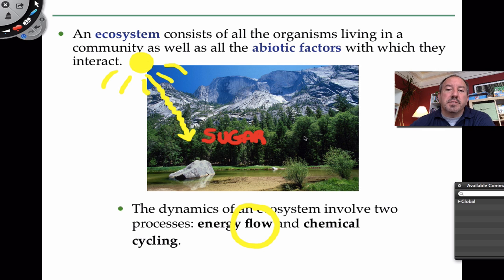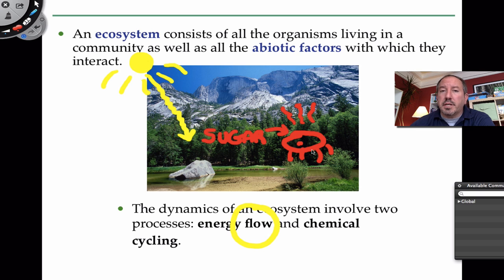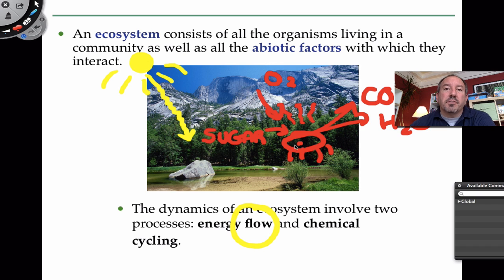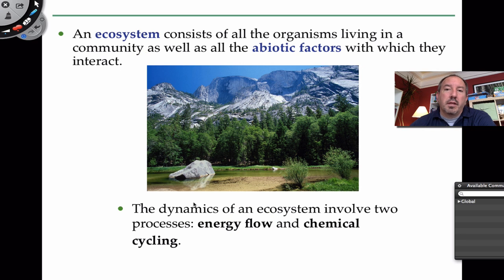If an animal comes along — a heterotroph — and consumes that energy in the form of a carbohydrate, a sugar, it's going to utilize that energy, and some of that energy is going to be dissipated in the form of heat. This is called cell respiration, where it's taking in oxygen and burning the sugar, producing carbon dioxide and water. As a result, it's burning that energy, and some energy is lost in the form of heat. There are physical laws governing this phenomenon.